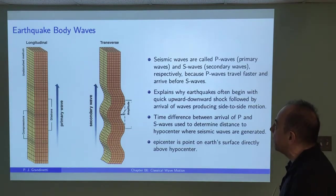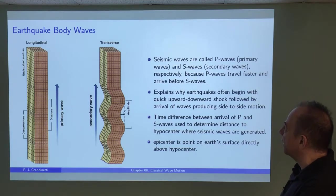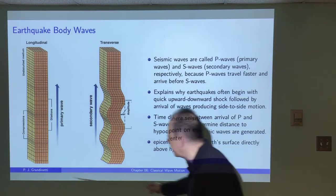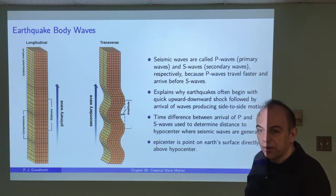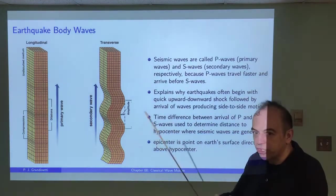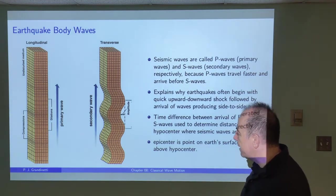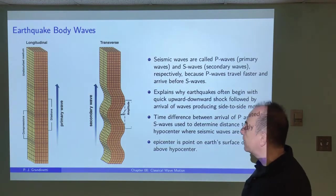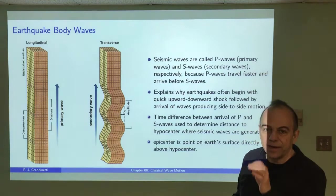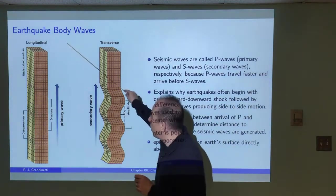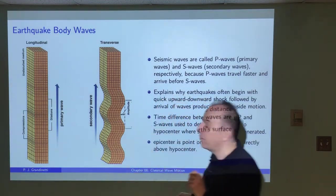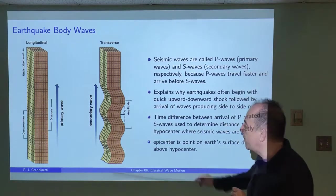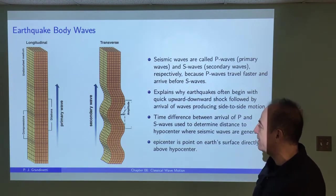A nice example where you have both types of waves — transverse and longitudinal — are earthquakes. Earthquakes start somewhere deep in the earth at a point called the hypocenter, where a shift in the plates or some other disturbance propagates up to the surface. We usually think about earthquakes as occurring at an epicenter, which is the spot on the earth's surface directly above the hypocenter where you feel the earthquake.